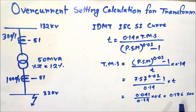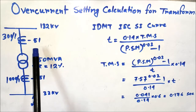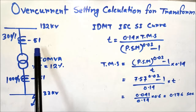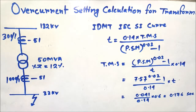The TMS and PSM values for the LV overcurrent relay have been calculated. Now we will calculate the settings for the HV overcurrent relay (51 HV), including both the plug setting multiplier (PSM) and the time multiplier setting (TMS).